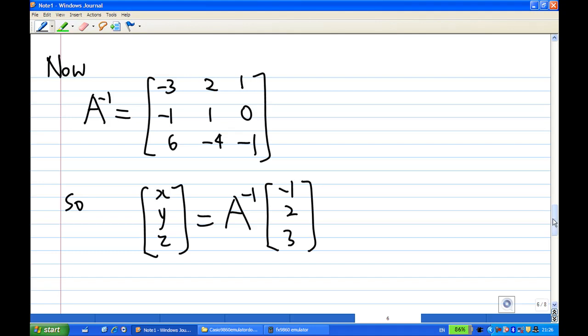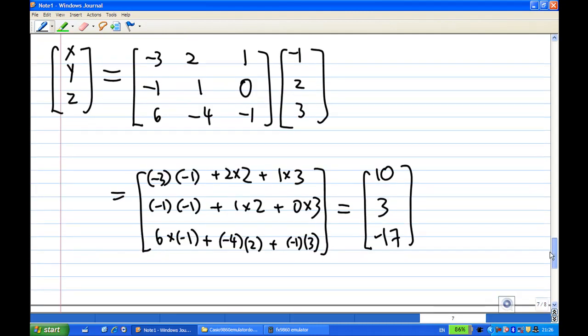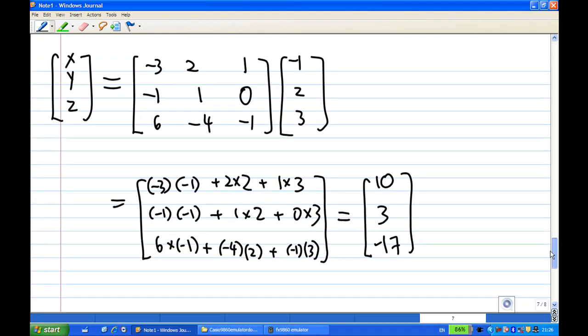So, [x; y; z] equals A inverse times [-1; 2; 3]. This becomes [x; y; z] equal to [-3,2,1; -1,1,0; 6,-4,-1] times [-1; 2; 3].